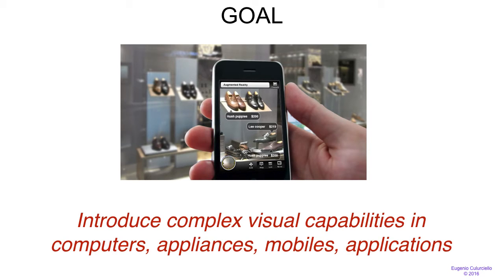Another side of this goal is to introduce complex visual capabilities in computers, appliances, mobile phones, and various applications. The course is focused really on visual capabilities at the moment, but this can be extended to a variety of other capabilities. The goal is to introduce these capabilities into computers so that they can start relieving us from tedious tasks, be able to accomplish tasks by themselves, and solve them with little supervision.